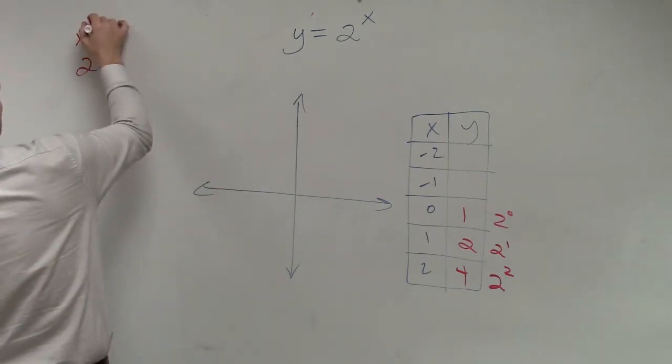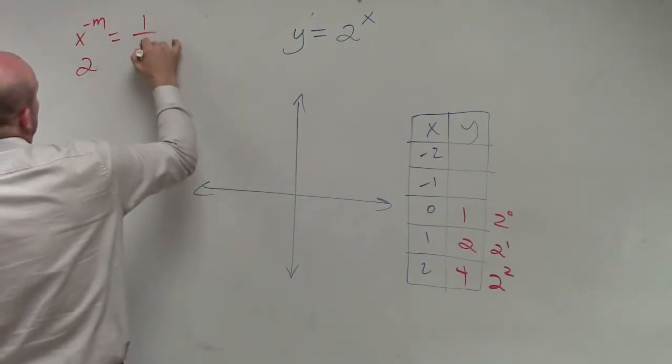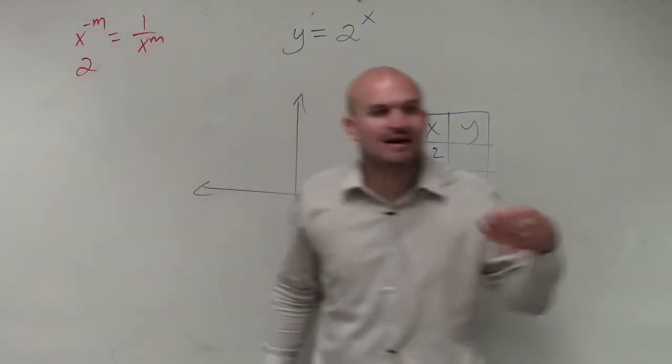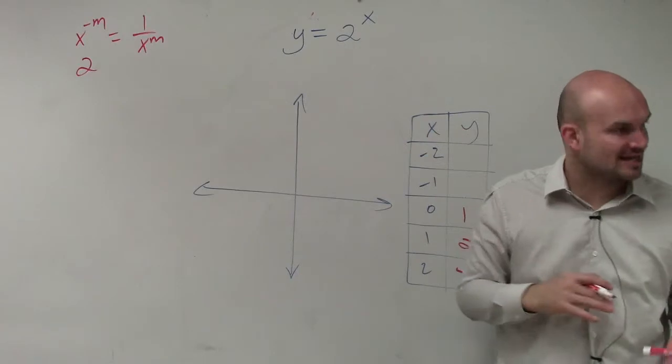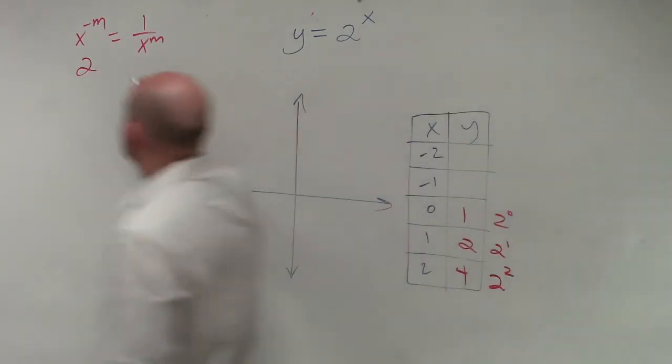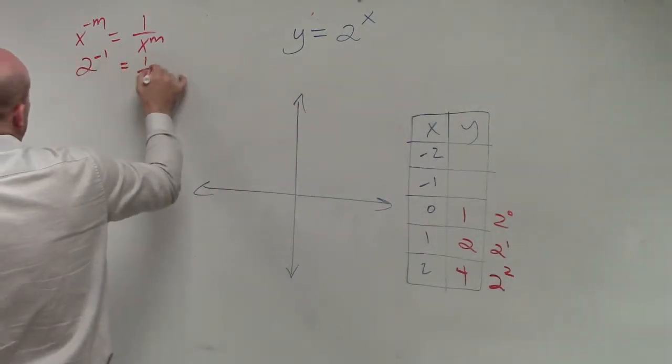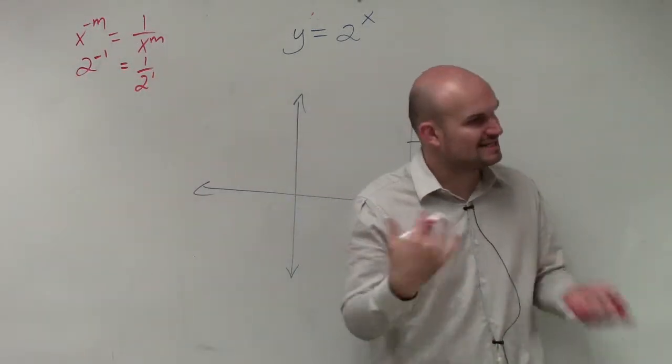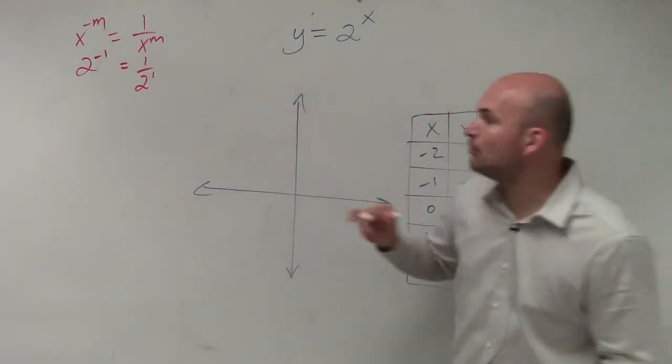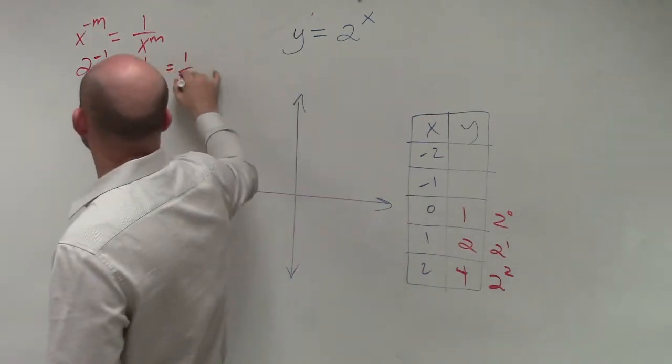Then the rule of exponents that a lot of us forgot is, remember, when you have a negative exponent, to make that negative exponent positive, you've got to rewrite it as a reciprocal. So if I have 2 to the negative first power, to rewrite that as a positive exponent, I need to put that over 1, or as its reciprocal. So now it's going to be 1 over 2 to the first power, which is 1 half.